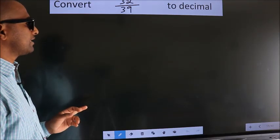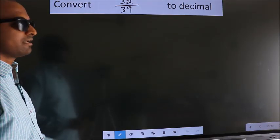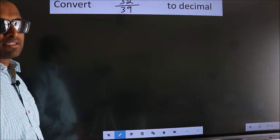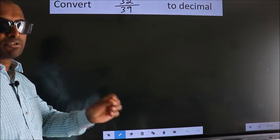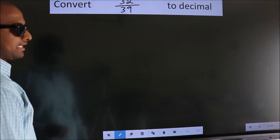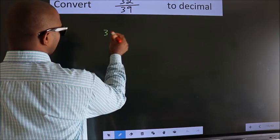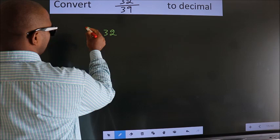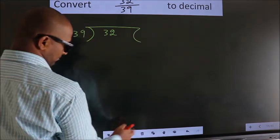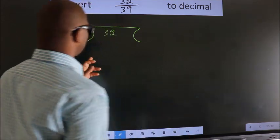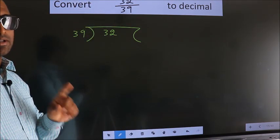Convert 32 by 39 to decimal. To convert this to decimal we have to divide, and to divide we should frame it in this way: 32 here, 39 here. This is your step 1.